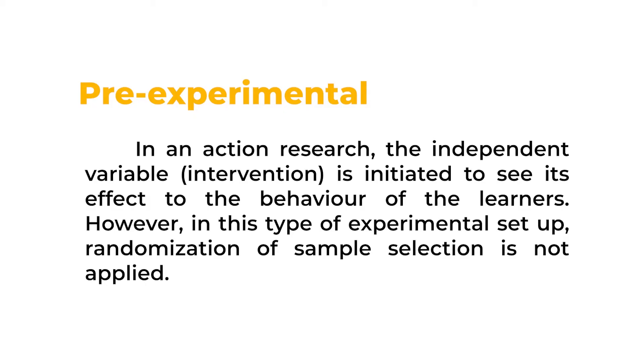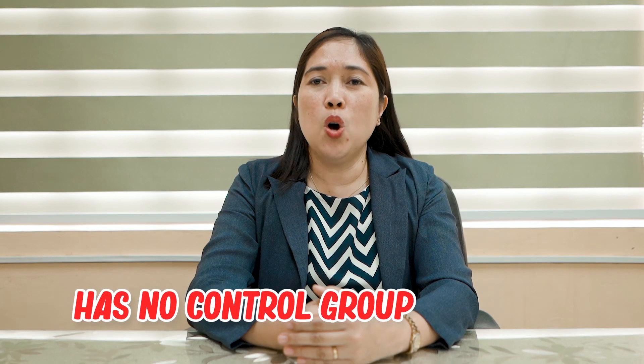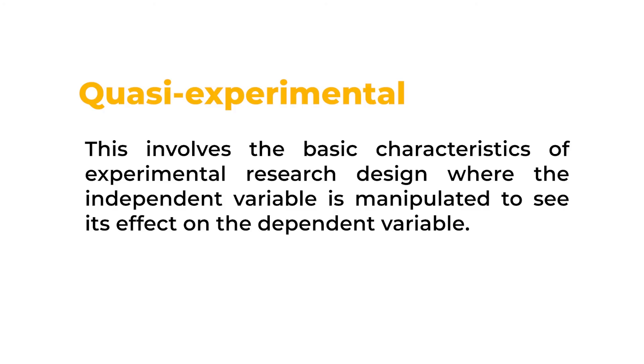In pre-experimental action research, the independent variable or the intervention is initiated to see its effect on the behavior of the learners. However, in this type of experimental setup, randomization of sample is not applied and there is no control group. For example, you will initiate a reading intervention in your class — all of the learners in that class are respondents and receive the same intervention. Or if you want to create a special class for your identified respondents, such as struggling readers, the whole members of the special reading class will be part of the study and all of them will receive the same intervention, with their performance measured quantitatively.